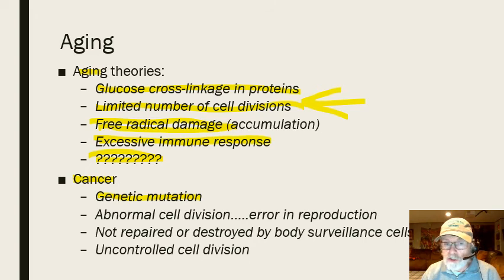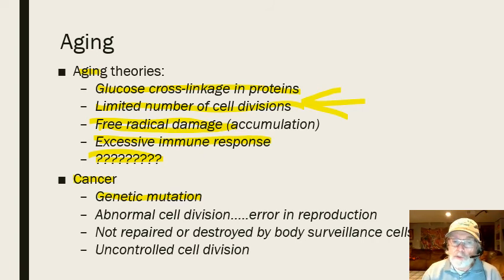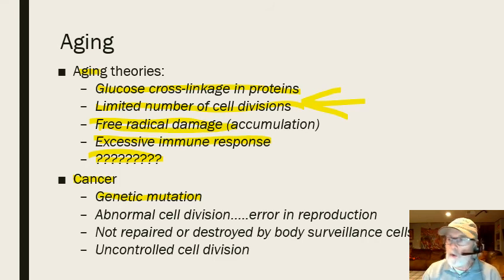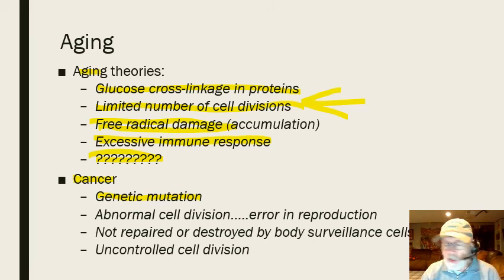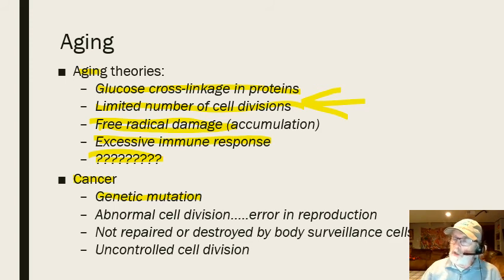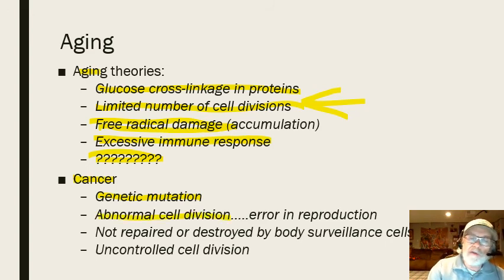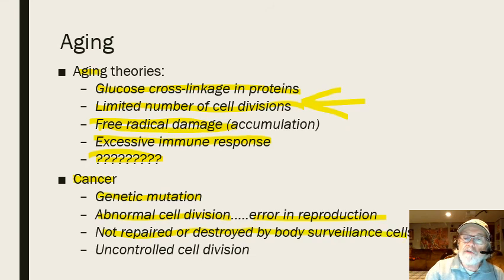A classic example is breast cancer and the BRCA1 and BRCA2 genes — surveillance genes that produce proteins that survey the body for abnormal cell divisions. When abnormal cell division is detected, these proteins either repair the mutation or destroy the cell. When mutations occur in the BRCA1 or BRCA2 genes, the surveillance system doesn't work as well, significantly increasing the incidence of developing certain cancers like breast cancer.